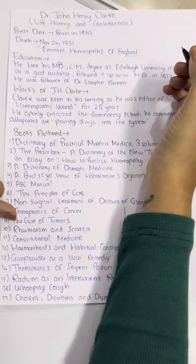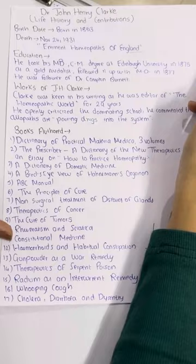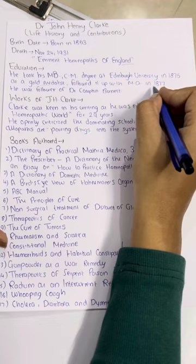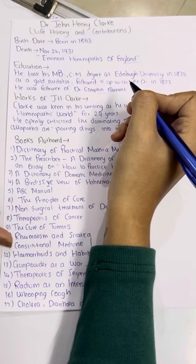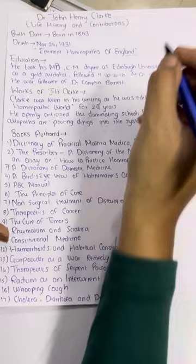Regarding his education, he took his MB and CM degree at Edinburgh University in 1875 as a gold medalist, followed by his MD degree in 1877. He was a follower of Dr. Compton Burnett.